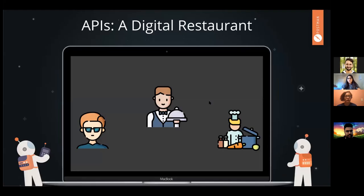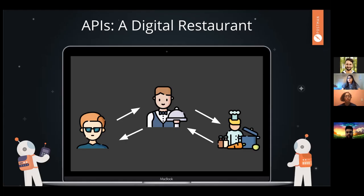On a high level, an API really serves as a way to communicate between a client and a server. One way that we can think about this is as a digital restaurant. If I'm at my favorite restaurant and I'm going to order something, I can't just go directly to the kitchen and say, make me this. If I want to make a request for food from the kitchen, I will talk to the waiter, and the waiter is going to go back to the kitchen and either bring me what I asked for or tell me, we don't have that today.